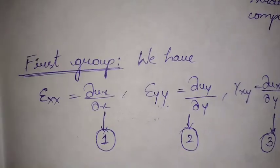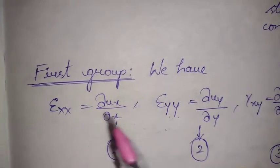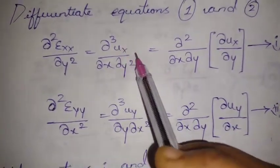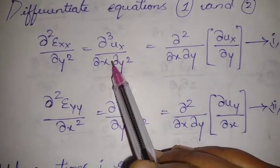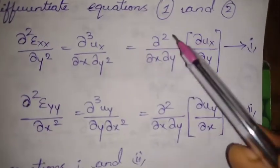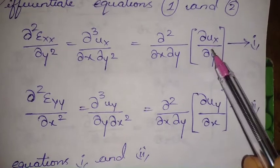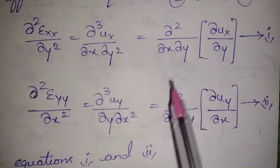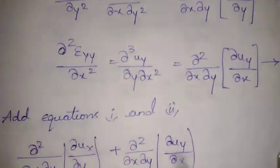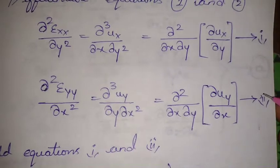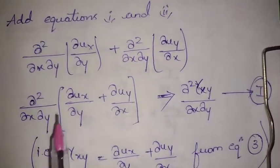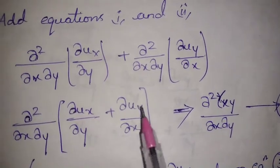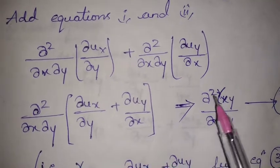Differentiating epsilon xx gives us dou ux / dou x on the right-hand side. Double differentiating with respect to y gives dou² ux / (dou x · dou y²), taking dou² / (dou x · dou y) common. Similarly, double differentiating the second equation with respect to x gives a corresponding term, also with dou² / (dou x · dou y) taken common.